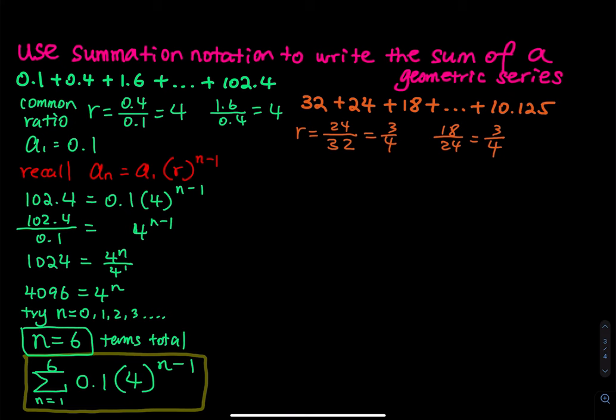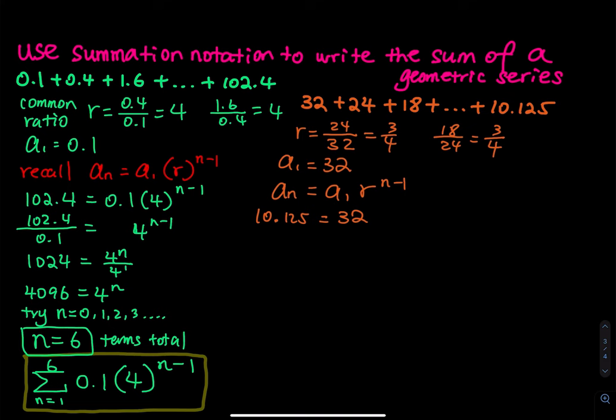I have to find the nth term. The nth term formula is a_n equals a_1 times r to the n minus 1. I know the nth term is 10.125 and a_1 is equal to 32. The common ratio is 3 over 4, and you have the n minus 1 exponent.